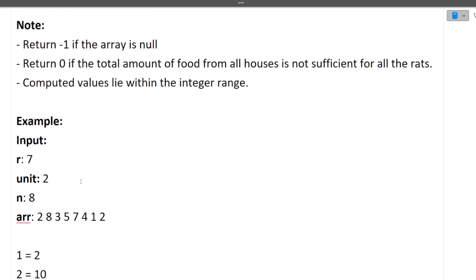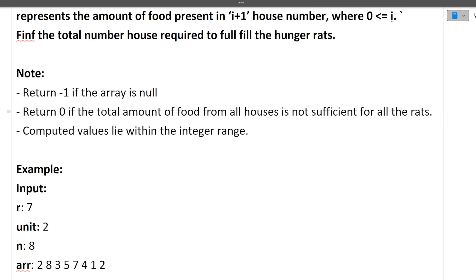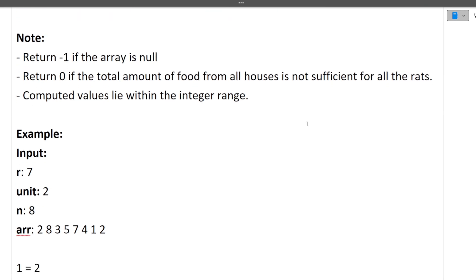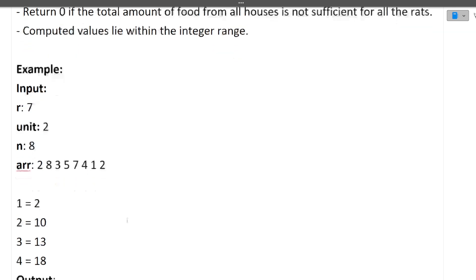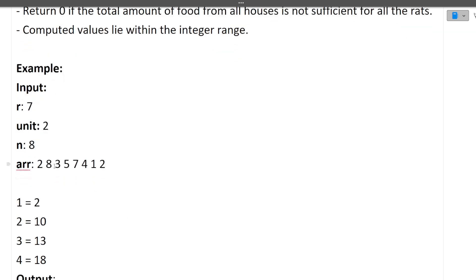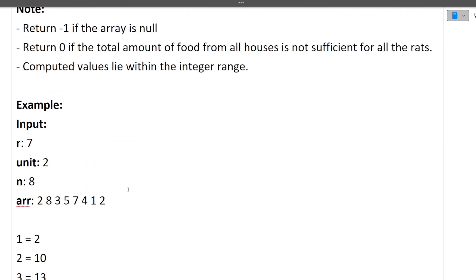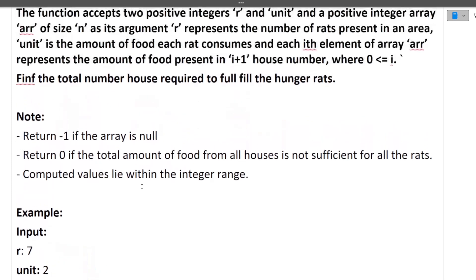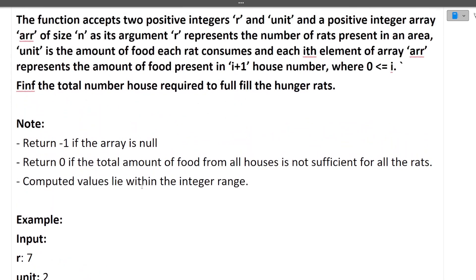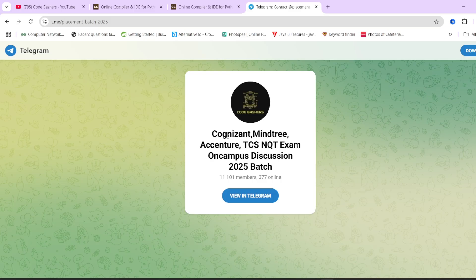Some notes: return 0 if the total amount of food from all the houses is not sufficient for all the rats, meaning if the total food required by the rats is greater than the sum of the array, return 0. Return -1 if the array is empty. The code is straightforward, so let's quickly move towards the coding part.